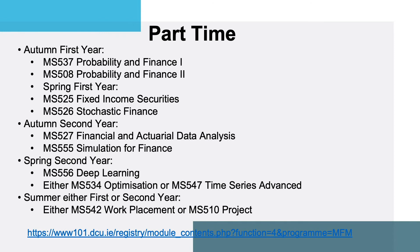For the part-time course, the autumn of the first year includes two modules — Probability in Finance One and Two — which need to be completed first so that students have the probability background necessary for the other modules. In the spring of the first year, there are the modules on Fixed Income Securities and Stochastic Finance.